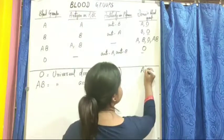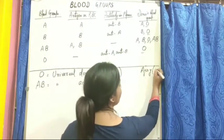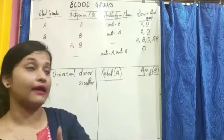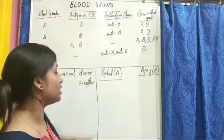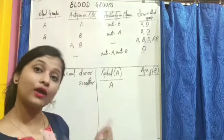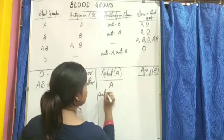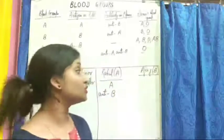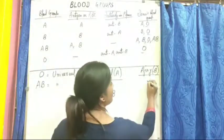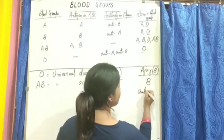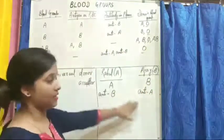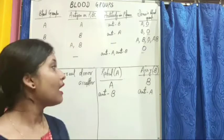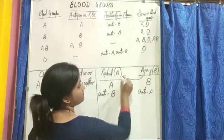The second person is Ajay, and Ajay's blood group is B. From our chart, Rahul's blood has antigen A and antibody anti-B. Ajay's blood group is B, so his blood has antigen B and antibody anti-A.